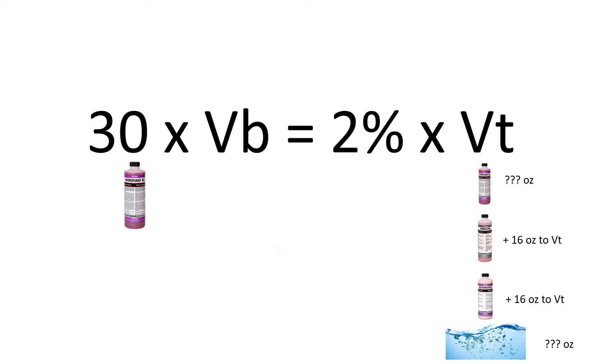So now let's look at our equation. We have our 30 index from our Intrafiant. We have set a solution strength of 2%. And then we have a total volume that will be made up of whatever our VB of Intrafiant turns out to be, one 16 ounce bottle of ProFlow, one 16 ounce bottle of Restorative, and the rest will be made up of water.